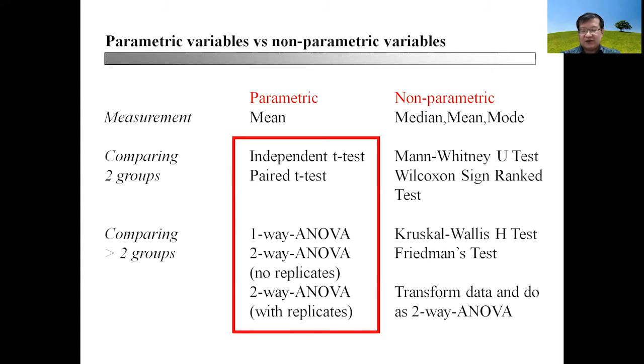When comparing two groups of parametric data, you use independent t-test or paired t-test. The equivalent in non-parametric data will be Mann-Whitney U-test for independent t-test and Wilcoxon signed-rank test for paired t-test.